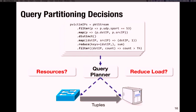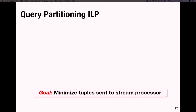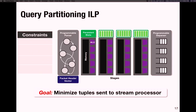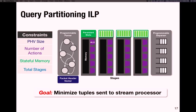The goal of the ILP is to minimize the number of tuples sent to the stream processor, subject to data plane constraints: the size of the packet header vector, the number of actions performable in each stage, the amount of persistent state available for stateful operators in each stage, and the total number of stages. We use representative packet traces to estimate resource requirements for individual match-action tables and to estimate the number of tuples that will be sent to the stream processor.